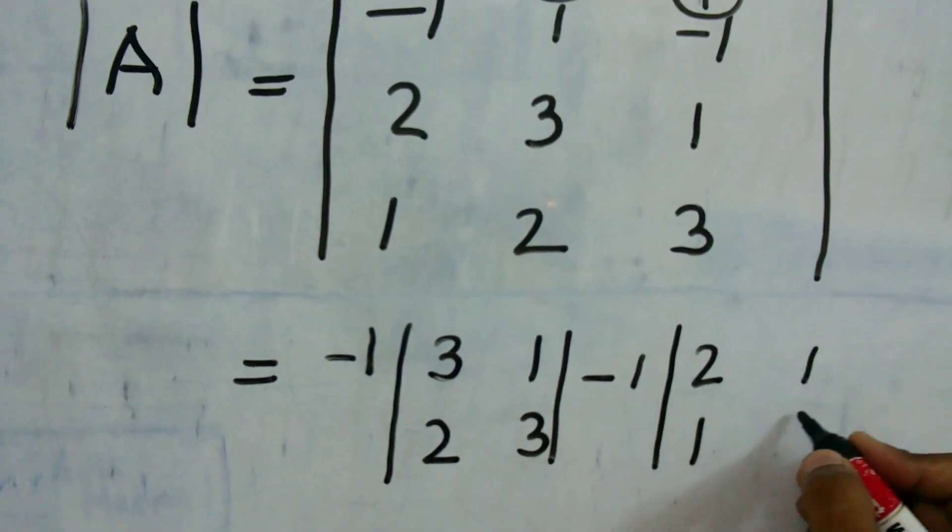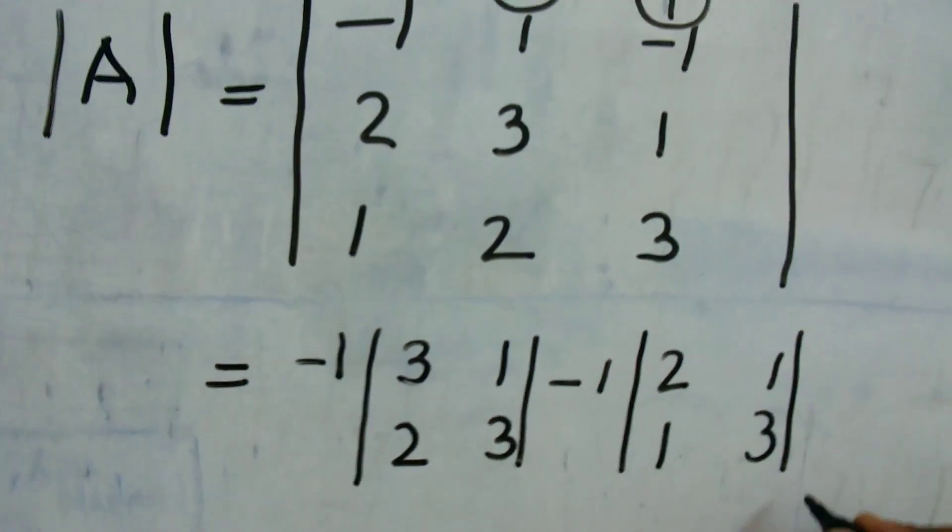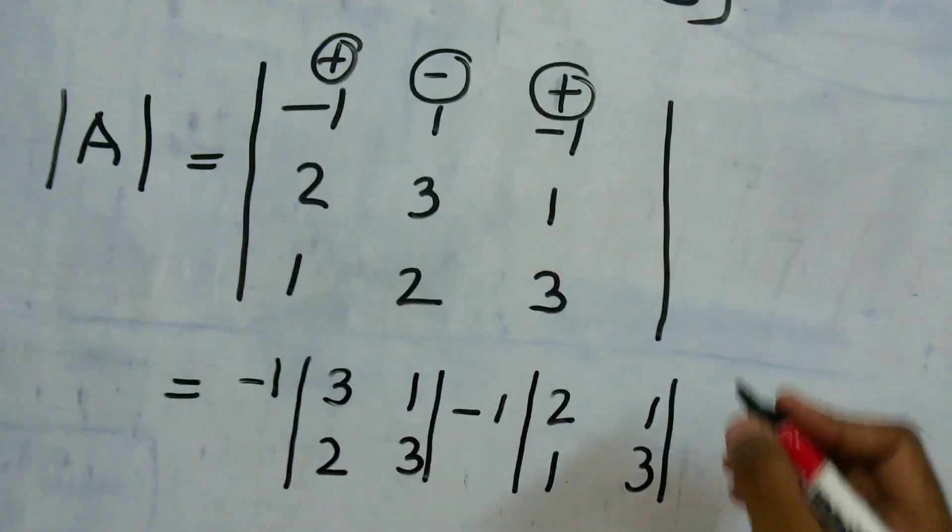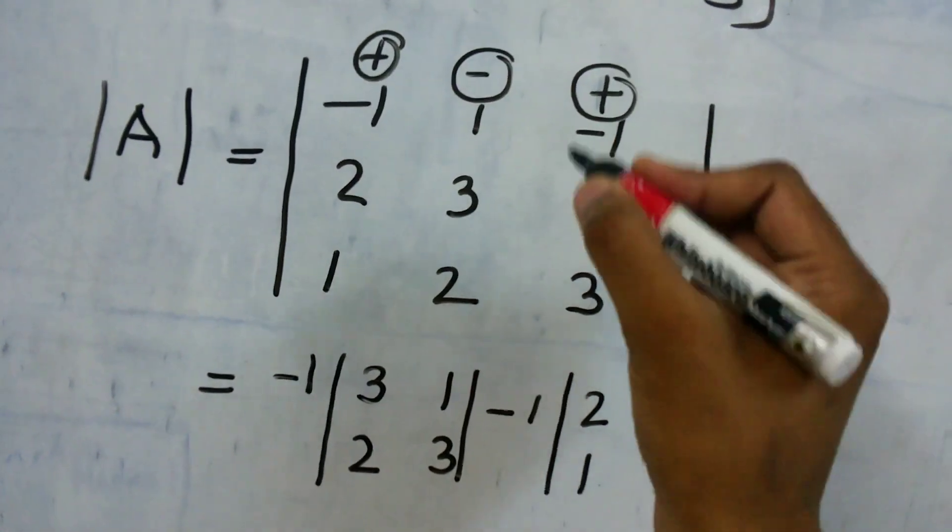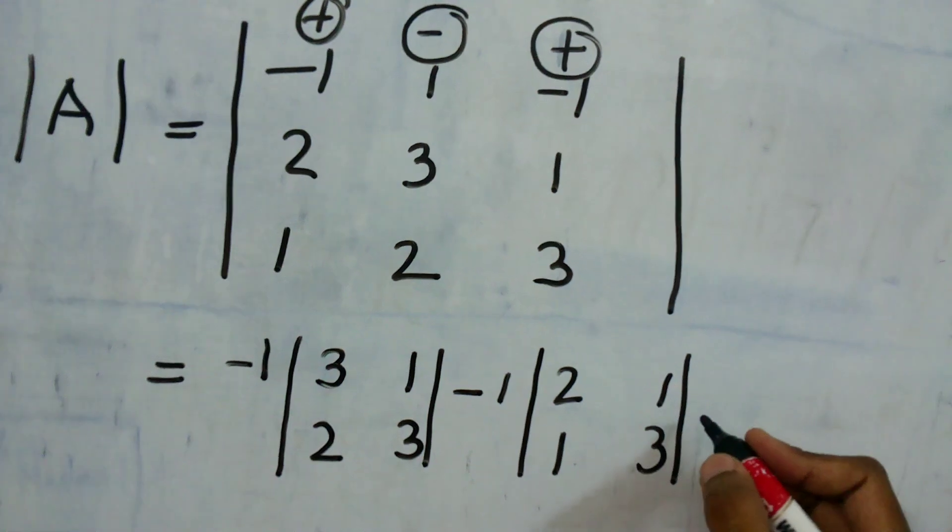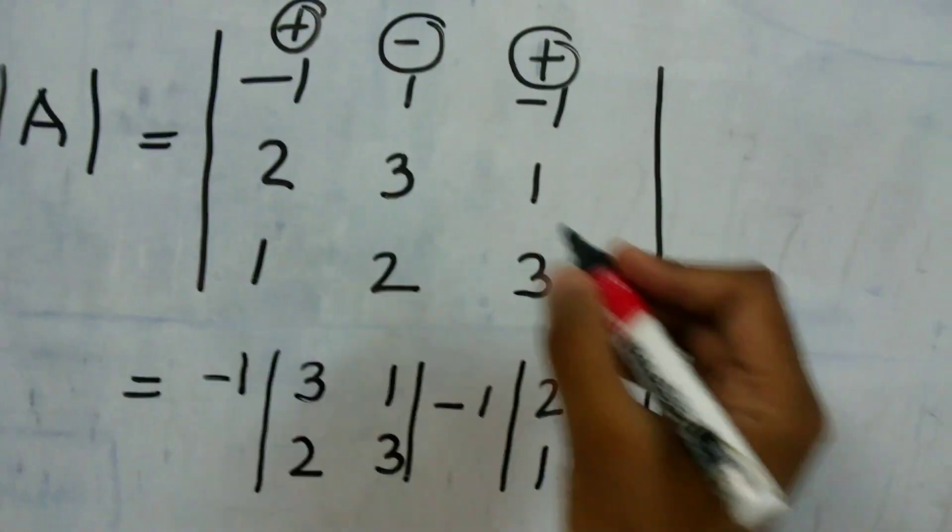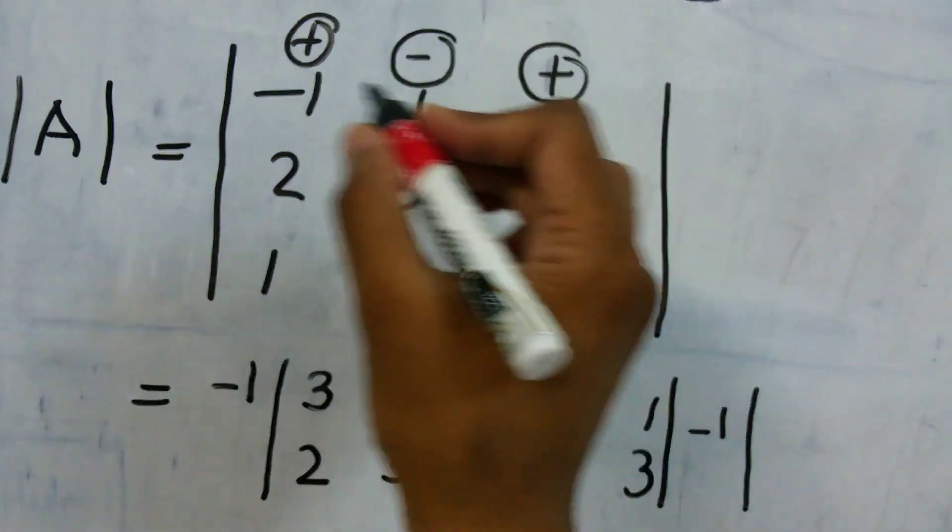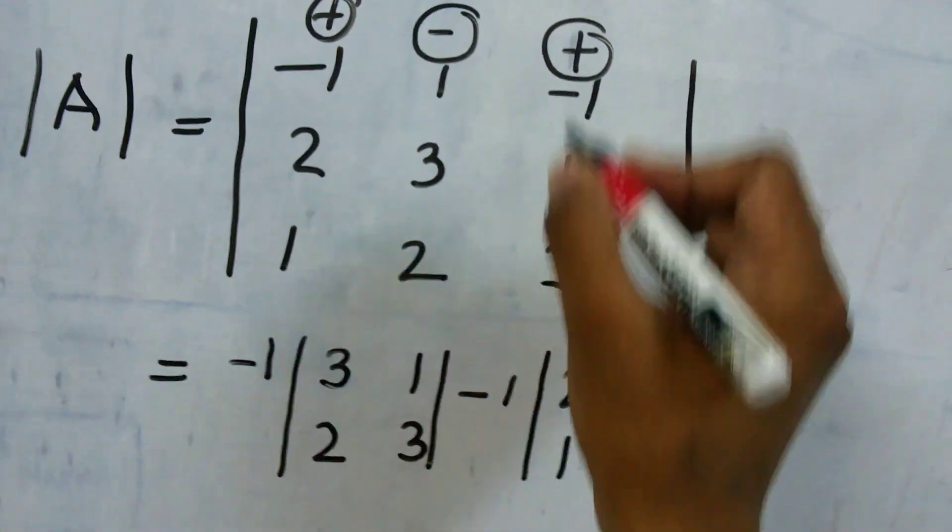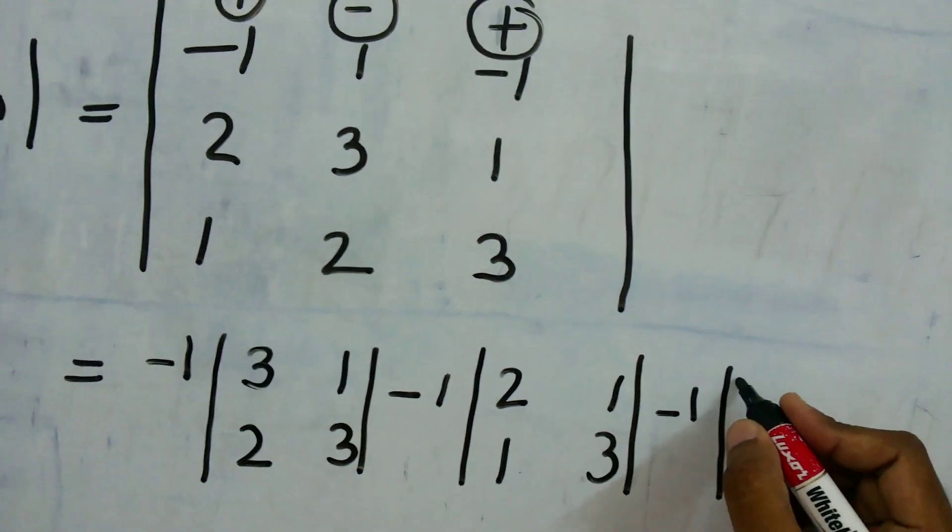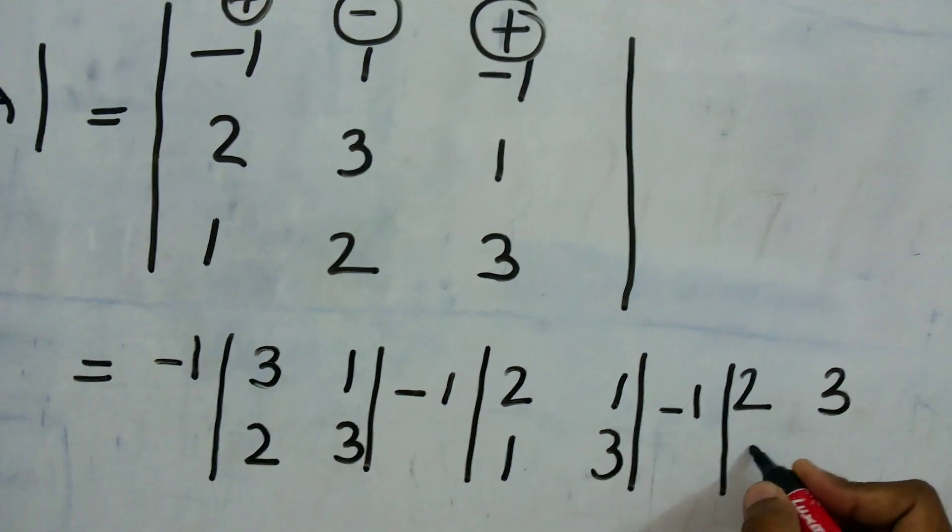Then as I mentioned, this is positive, that means it does not have effect on the sign of this particular element. So this will be minus 1. And we have to forget this particular row and this particular column. So we are left with 2, 3, 1, 2.